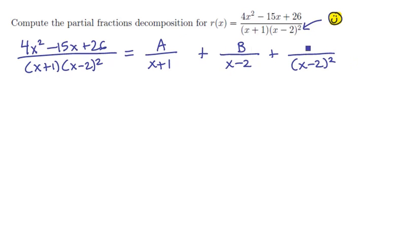Now we just have to work out the coefficients a, b, and c that would make this true. To get one step closer, let's stick the right hand side back on a common denominator of x plus 1 times x minus 2 quantity squared.